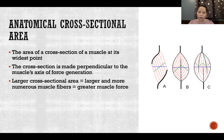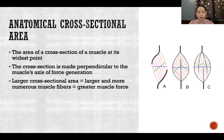A larger cross-sectional area means larger and more numerous muscle fibers, which means more capacity to produce muscle force. The bigger a muscle fiber, the more force it can produce. The more muscle fibers there are, the more force that muscle is able to produce. So the bigger the anatomical cross-sectional area, the more force; the smaller it is, the less force.